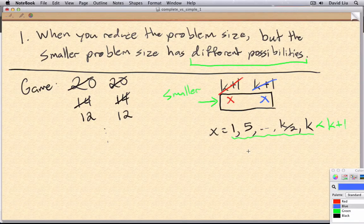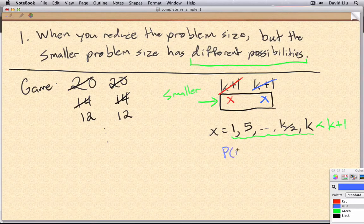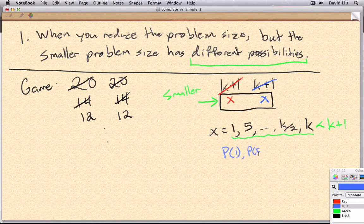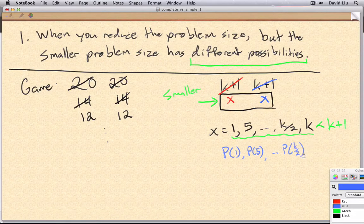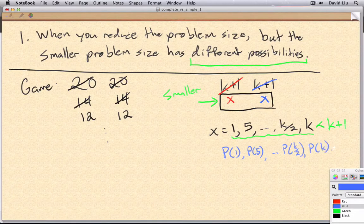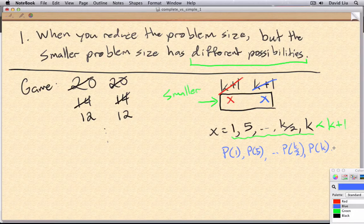And so if we wanted to use the induction hypothesis, well, we had to be able to assume P(1), and P(5), P(k/2), and P(k). And this is why we needed complete induction.